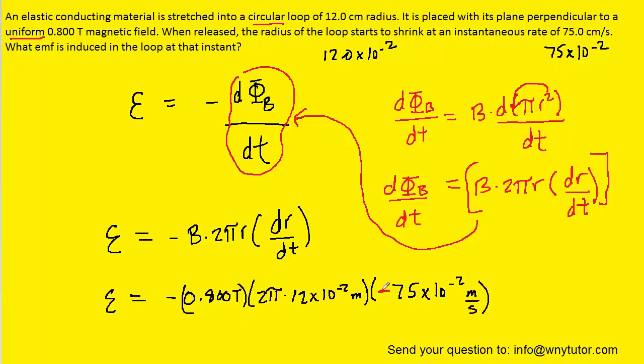So we've gone ahead and plugged in the known values. One thing you'll notice when we plugged in for the dr/dt, we included this minus sign right here. And the reason for that is that the question states that the loop is actually shrinking at that instantaneous rate of 75 centimeters per second. So because the loop is shrinking, that means that we have to include this negative sign to show that the radius is actually getting smaller as the loop shrinks.